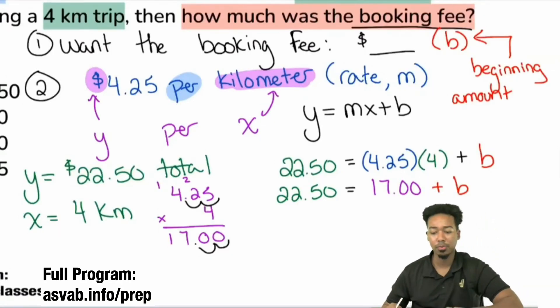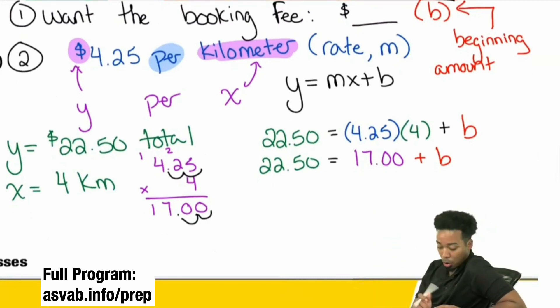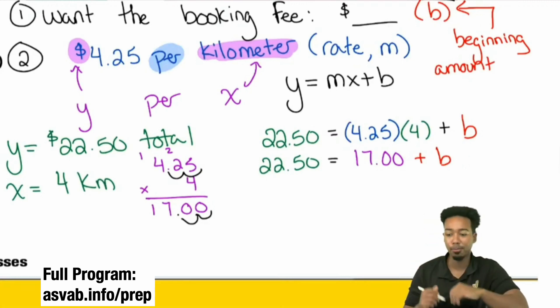So, look at this. Just take a look at this before we finish solving it. That $22.50, that total amount of $22.50, that is equal to the flat fee plus the fee that you piled up from the driver. So, four kilometers got us to $17 on that meter. But we still owe that flat fee. We're trying to figure out what that flat fee was.